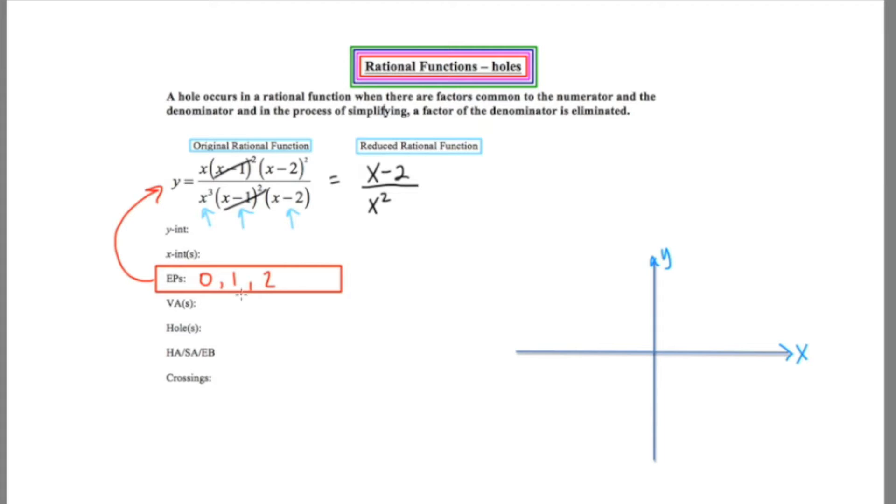All the other cues are going to come from the reduced function, which is good news because the reduced function is simpler and easier to work with. Let's start with the y-intercept. To find the y-intercept, I let x equal zero. Well, this isn't actually possible. We have negative two over zero. You can never divide by zero. So I'm getting the conclusion that there's no y-intercept.